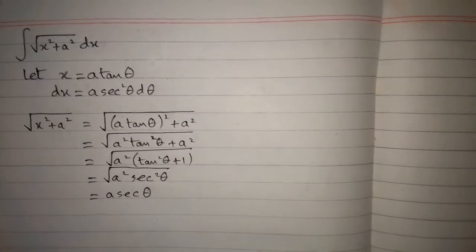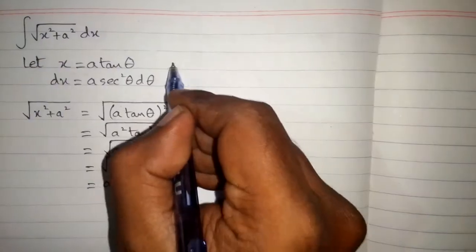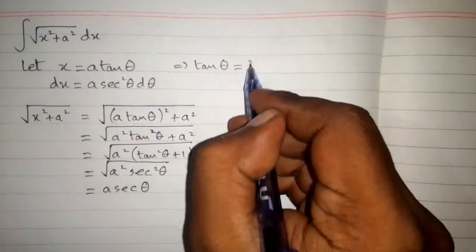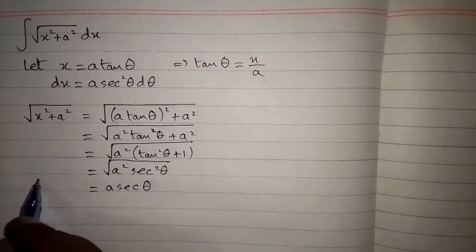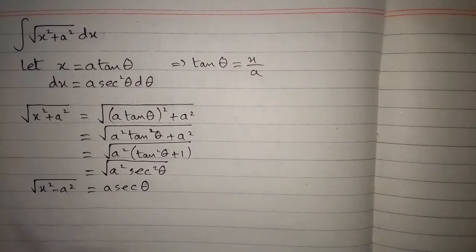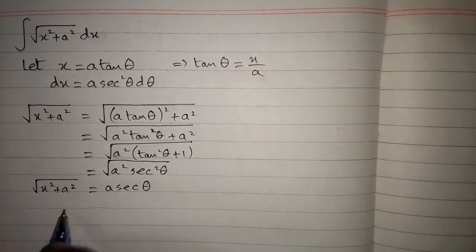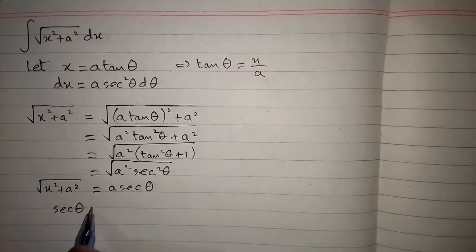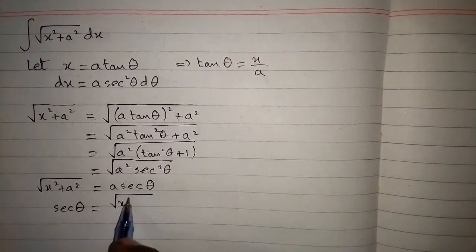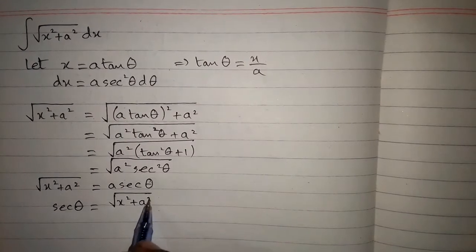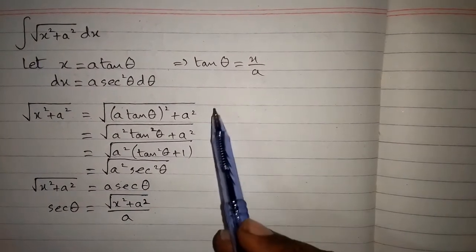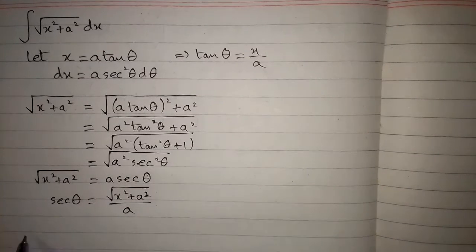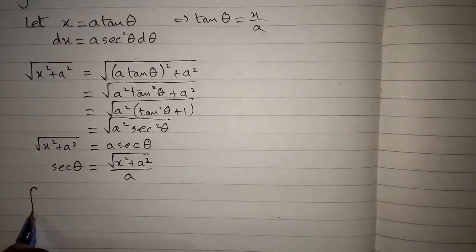This simplifies to a sec θ. Now we find the values of tan θ and sec θ from our substitution. We have tan θ equal to x over a, and from the equation √(x²+a²) = a sec θ, we find that sec θ is equal to the square root of x squared plus a squared, divided by a.